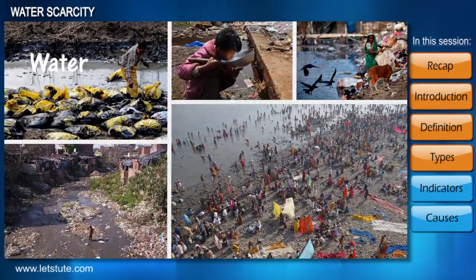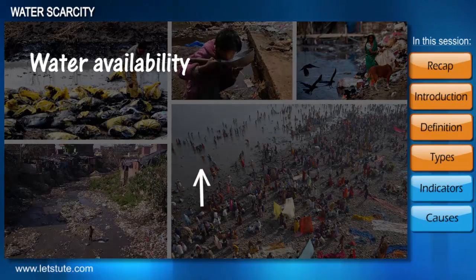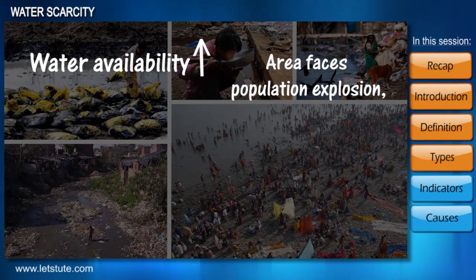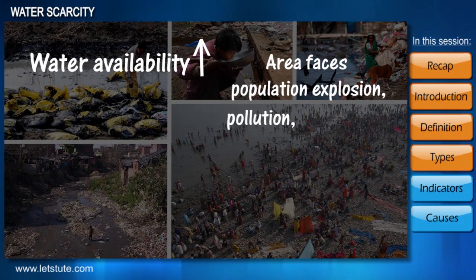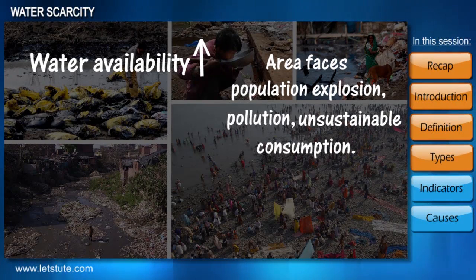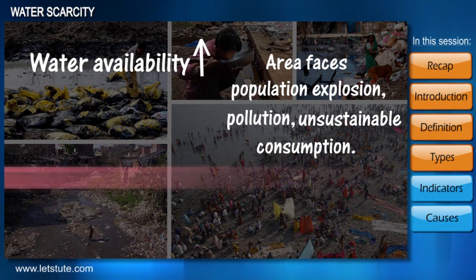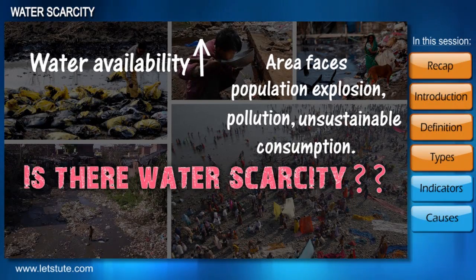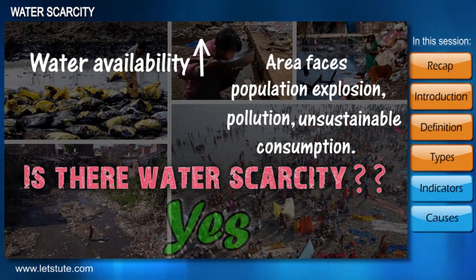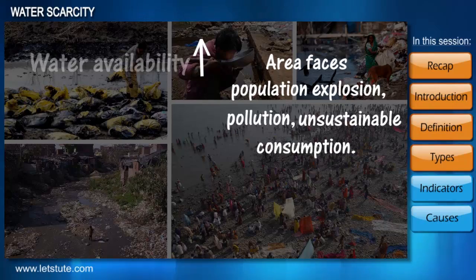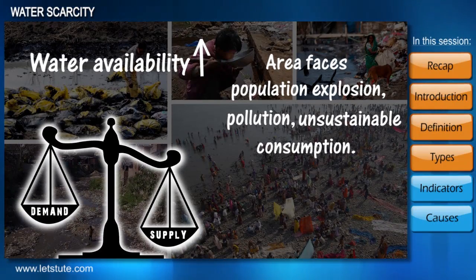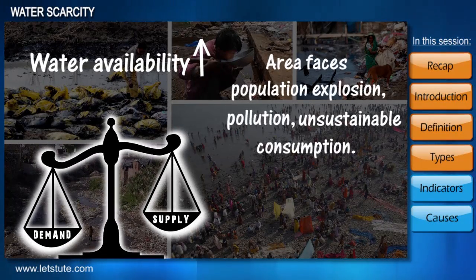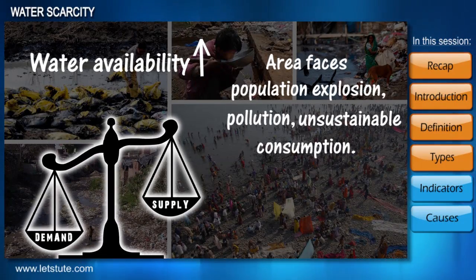In the second situation, a place has abundant natural water availability but faces excessive population growth, pollution, and unsustainable consumption. Can we call that place water scarce? Yes — even though water supply is available, the growing demand creates an imbalance between supply and demand, making it water scarce.